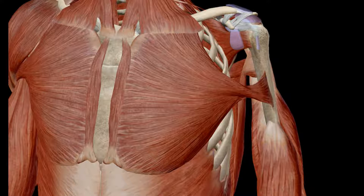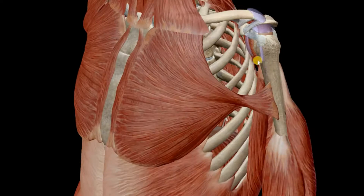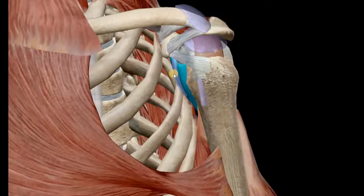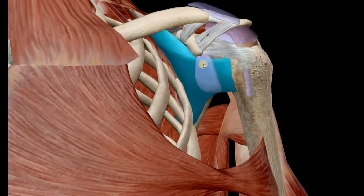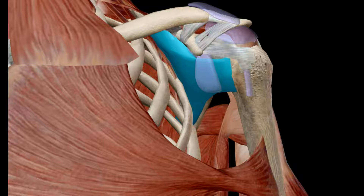In this video we are going to look at the subscapularis muscle, which originates from the subscapular fossa of the scapula. This well-hidden muscle is a large triangular muscle which fills the subscapular fossa, and it is one of the muscles of the rotator cuff.